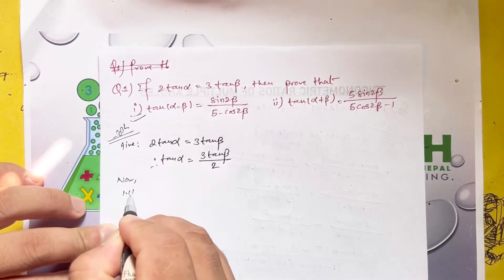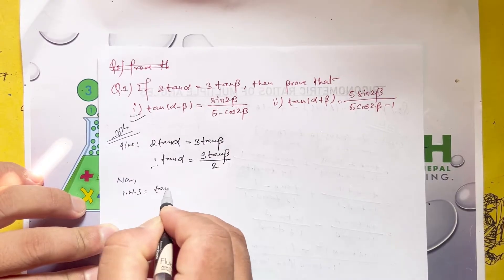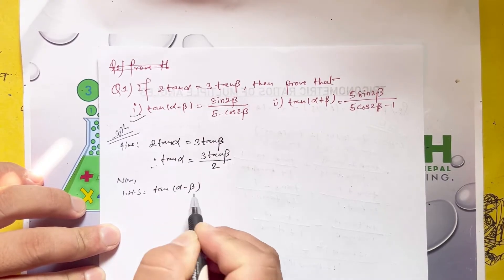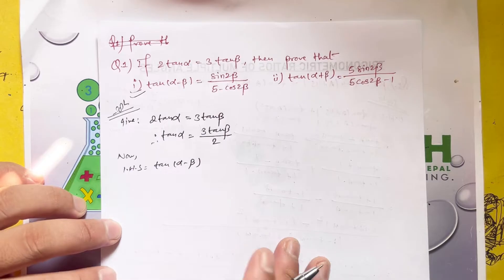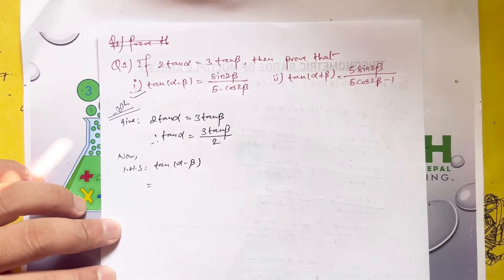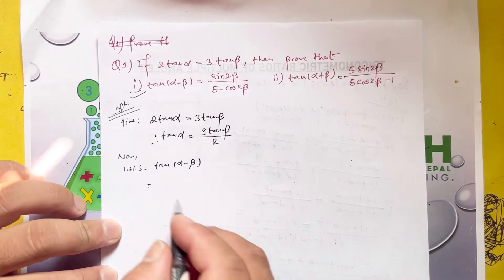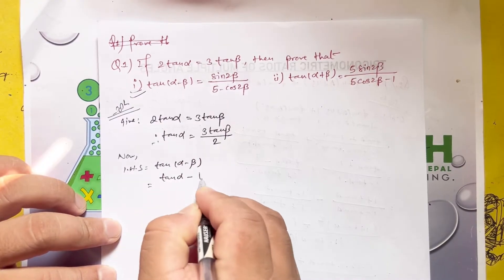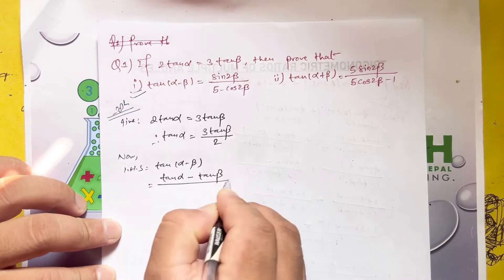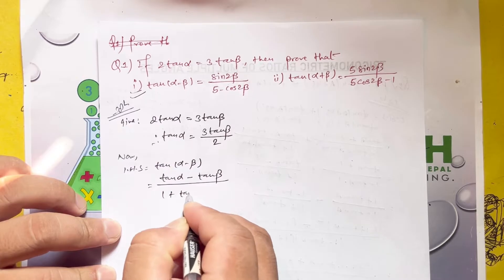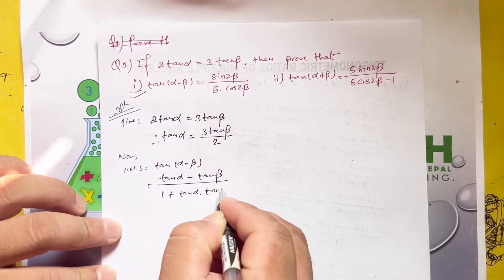For the LHS, we have tan of alpha minus beta. Using the formula for tan of A minus B, this equals tan alpha minus tan beta divided by 1 plus tan alpha tan beta.